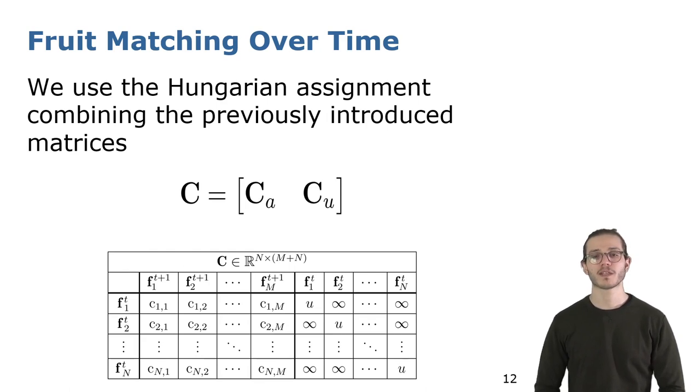We obtained the final metrics by merging CA and CU, and then we forwarded to the Hungarian assignment method, which tries to minimize the matching cost in order to return the optimal matching assignments.